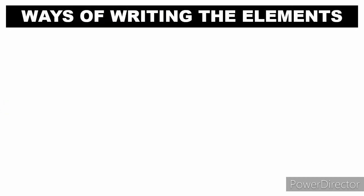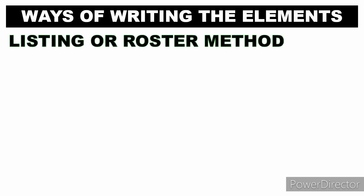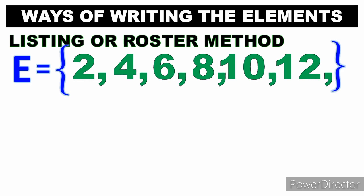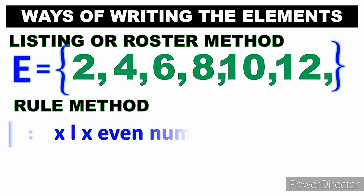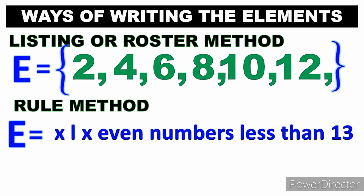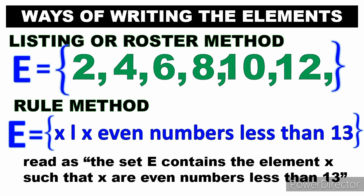There are two ways to write the elements of a set. The first is the listing or roster method: E = {2, 4, 6, 8, 10, 12}. The second is the rule method: E = {x | x are even numbers less than 13}, enclosed in braces. This is read as: 'the set E contains element x such that x are even numbers less than 13.'